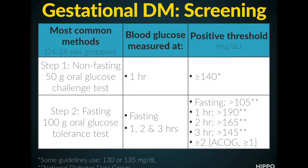If step one is positive, step two would be the next step. Here we administer a fasting 100 gram oral glucose tolerance test, and typically the blood glucose is measured at fasting and again at one, two, and three hours after ingestion. Positive thresholds here are: fasting greater than 105, after one hour greater than 190, after two hours greater than 165, and greater than 145 at three hours.